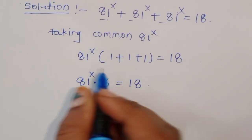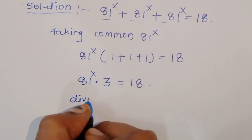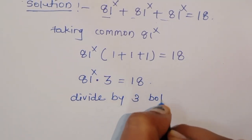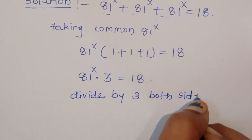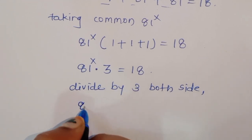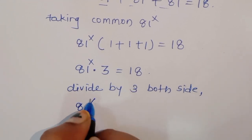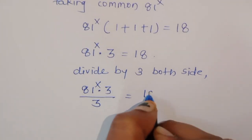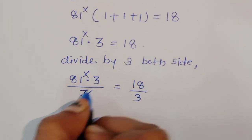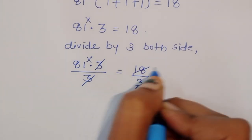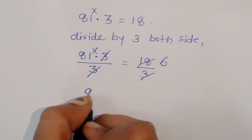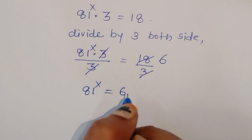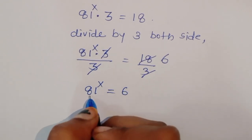Now we have to remove this 3, so we divide both sides by 3. We get 81 power x times 3 divided by 3 is equal to 18 divided by 3. The 3s cancel, giving us 81 power x is equal to 6.